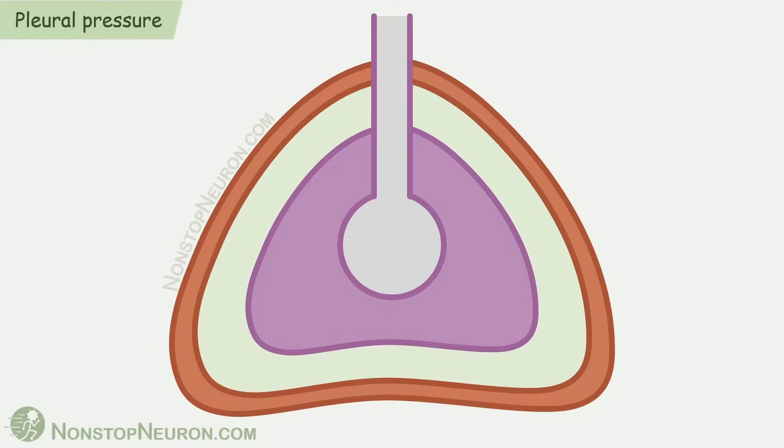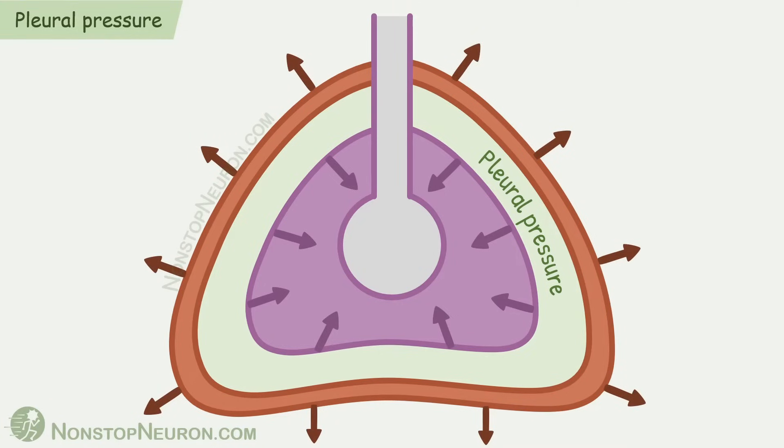Now pleural pressure or intrapleural pressure. It is pressure in pleural space. Lungs have elastic recoil which tends to collapse them. On the other hand, elastic recoil of chest wall tends to expand the thoracic cage. Because of these opposing forces, the pressure inside the pleura is negative. Continuous suction of fluid from pleural space into the lymphatics also contributes to negative intrapleural pressure.